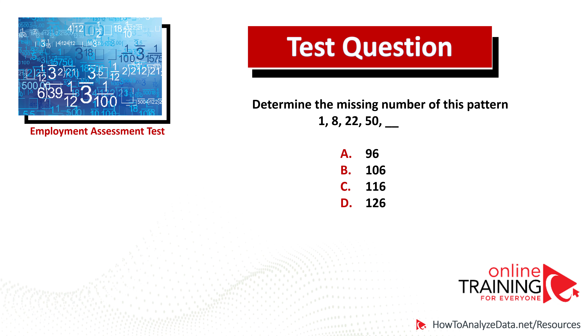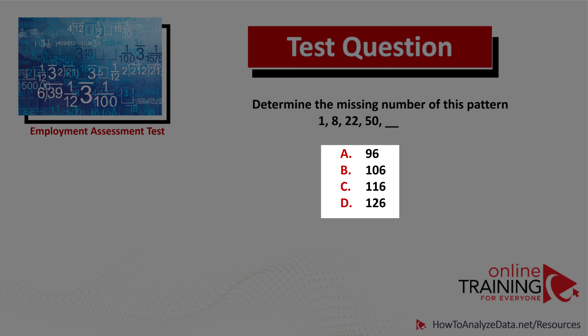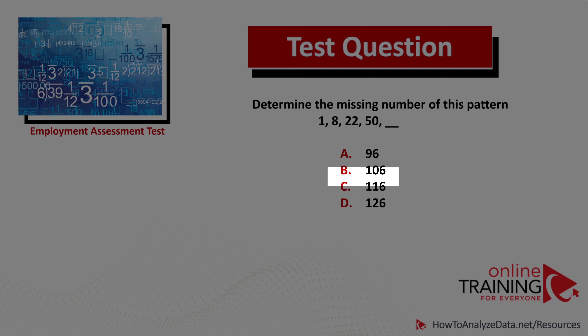Let's look at a tricky question you might frequently see as part of an employment assessment test. Determine the missing number in the pattern. You have four numbers presented and need to determine number five. The numbers are 1, 8, 22, 50, and you need to determine the next number out of four possible choices: Choice A, 96; Choice B, 106; Choice C, 116; and Choice D, 126. Do you think you know the answer?